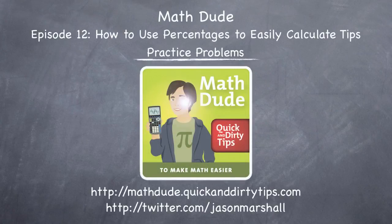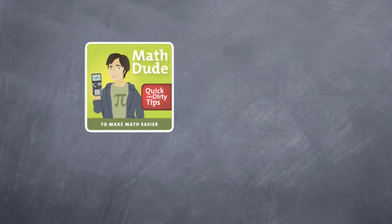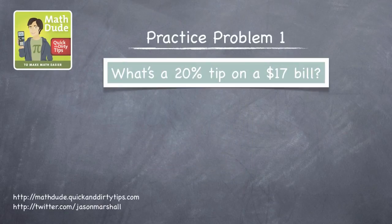Hey math fans, Jason Marshall here with solutions to the practice problems from the end of Math Dude episode 12. The first practice problem is to figure out what is a 20% tip on a $17 bill.